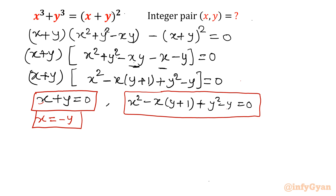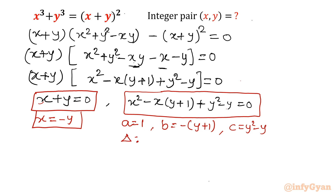The equation x² minus xy plus 1 plus y² minus y equals 0 is a quadratic equation in x. Let us solve this equation. Here a equals 1, b equals negative (y plus 1), and c equals y² minus y. We need to find the discriminant, because x and y should be real-valued, so the discriminant must be greater than or equal to 0.